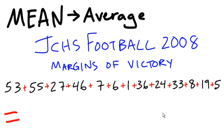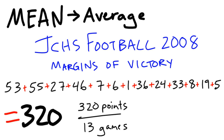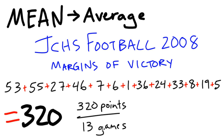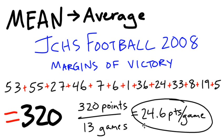We're going to look at this data as we go through these measures of central tendency. If you add all 13 scores up, they add up to 320 points — we won by 320 points this year. If you take that and divide it by the 13 games we played, you get 24.6 points per game. That ends up being the mean margin of victory for the team.